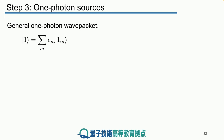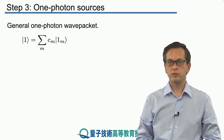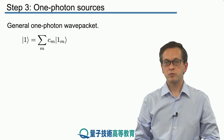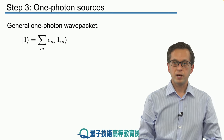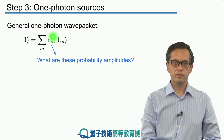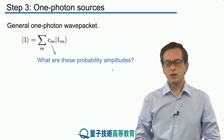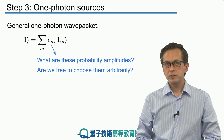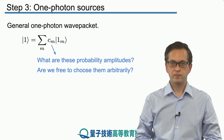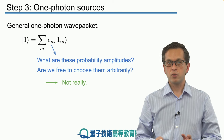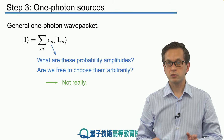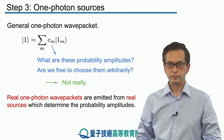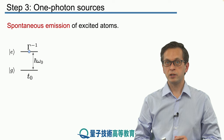Step 3: One-photon sources. We have seen the form for a general one-photon wave packet given by a superposition over all states where we have one photon in mode m. But we have not really talked about what these probability amplitudes are — the CM, these complex numbers. Can we set them to be anything as long as they satisfy the normalization condition? In principle, yes. But in the real world, not really. Since they should represent real single photons coming from real sources, the properties of these sources should somehow determine what these probability amplitudes are. So let's see how we can take that into account in our description of single photons.